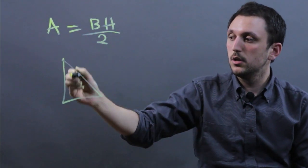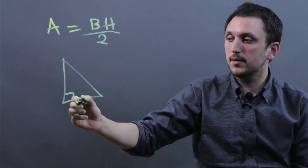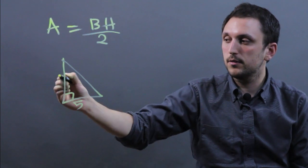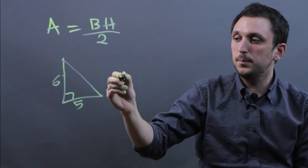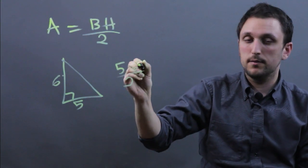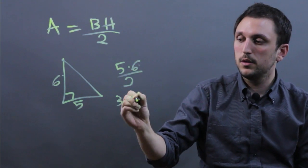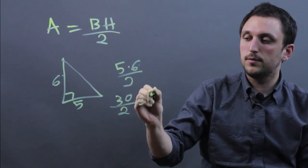So if we have a right triangle, we can say that this is the base, 5, and this is the height, 6. So it would be 5 times 6 over 2. 5 times 6 is 30 divided by 2 equals 15.